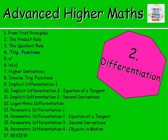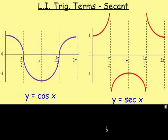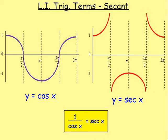Trig functions we have already come across in the past are obviously sin, cos, and tan. But I'm going to introduce you to some more. So if we have y equals cos x, we could easily graph that. We could equally graph 1 over cos x. And we call 1 over cos x sec x.